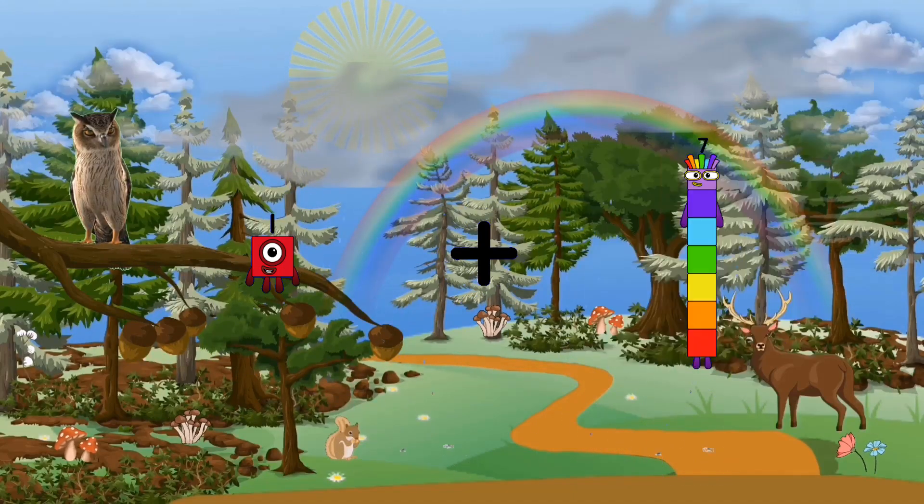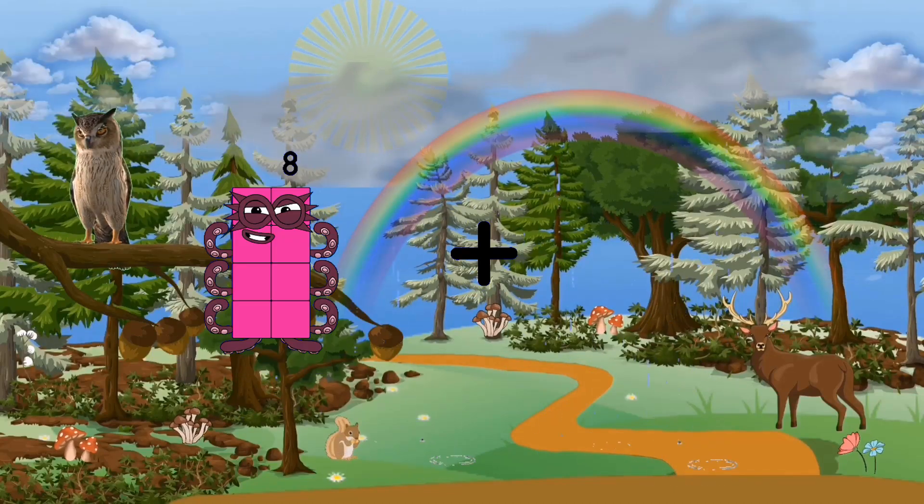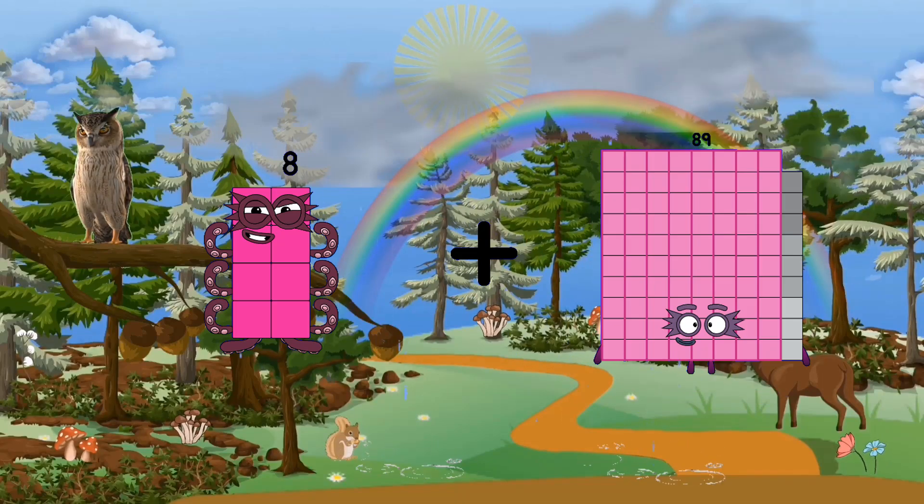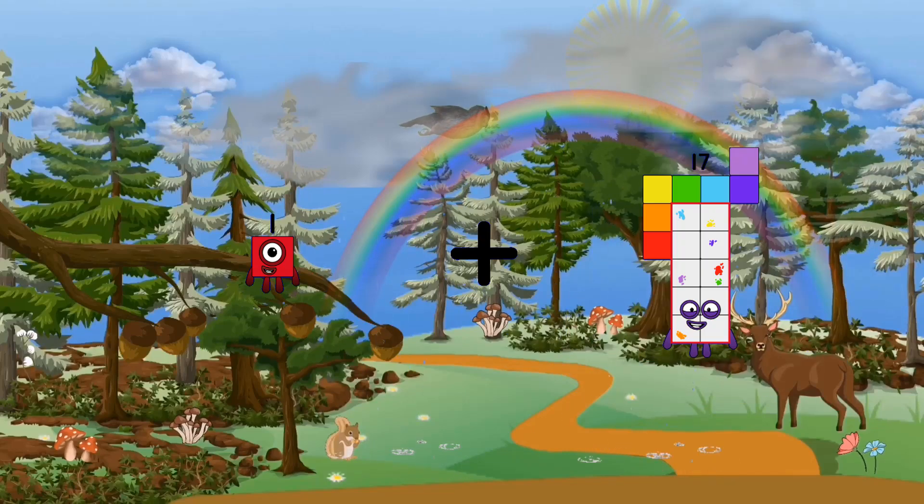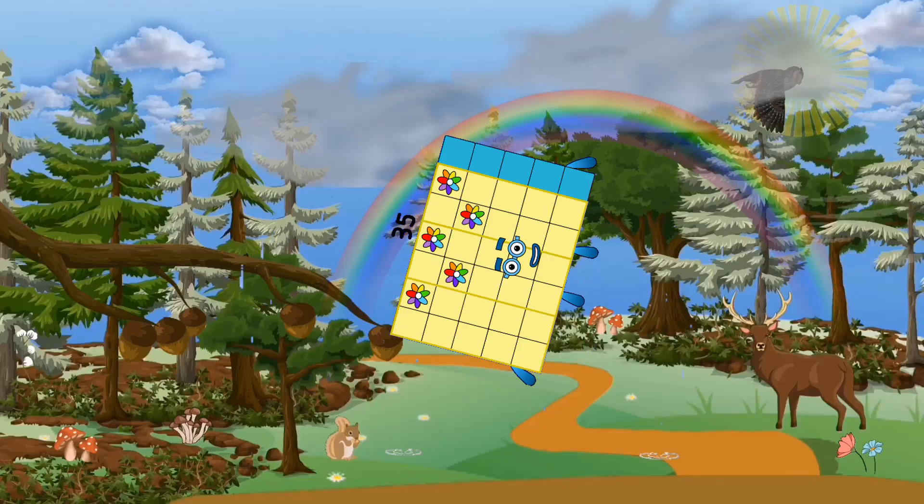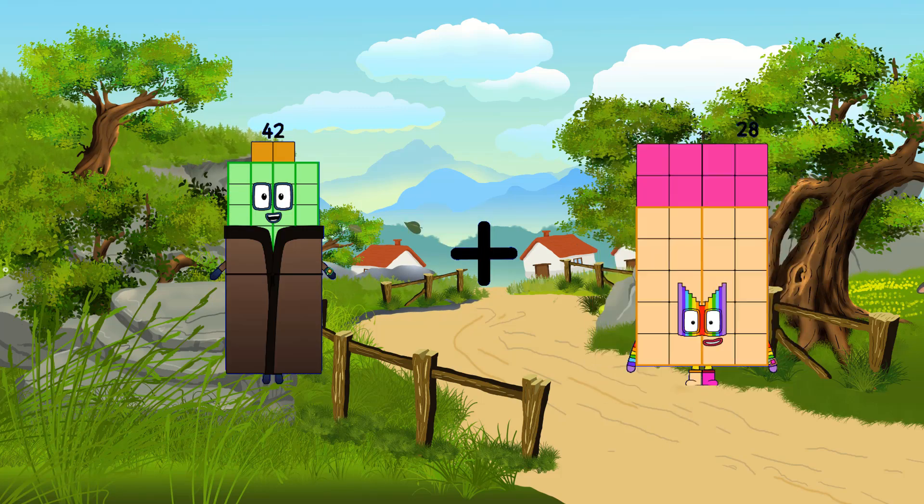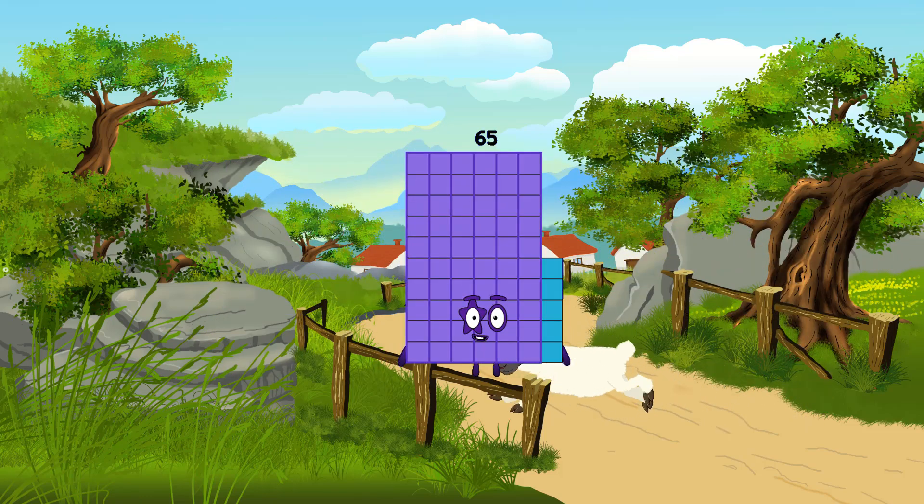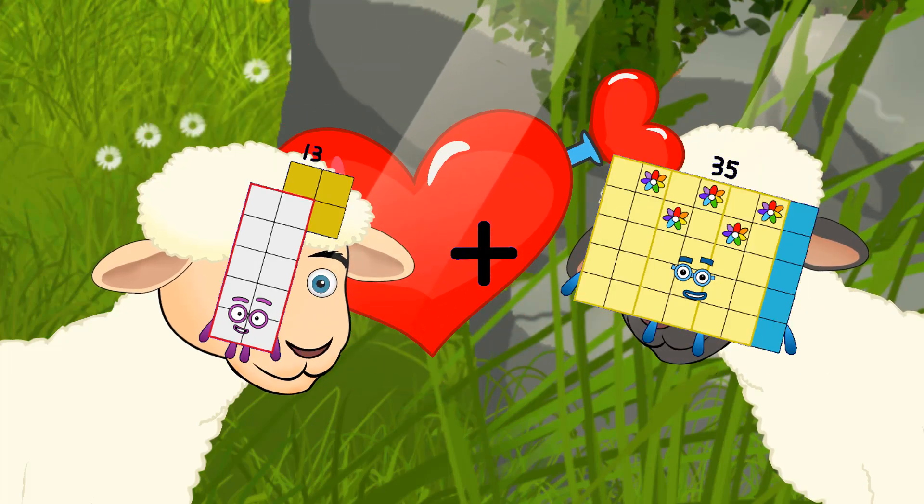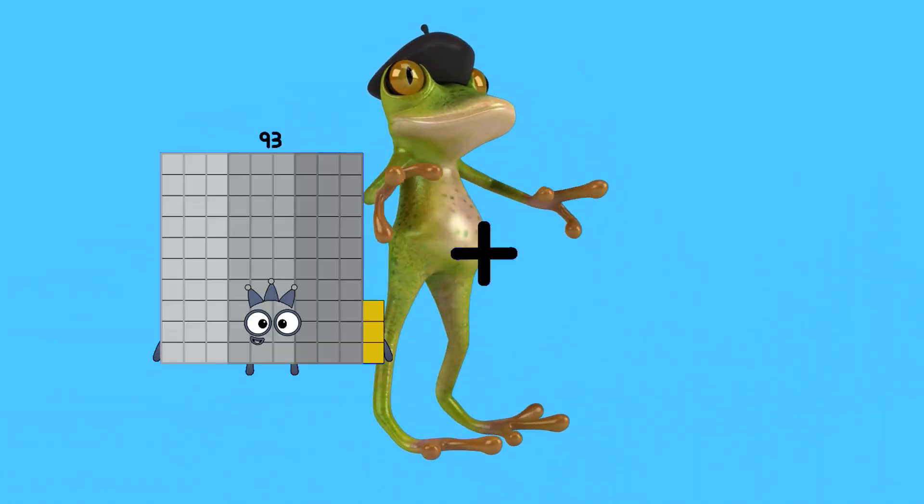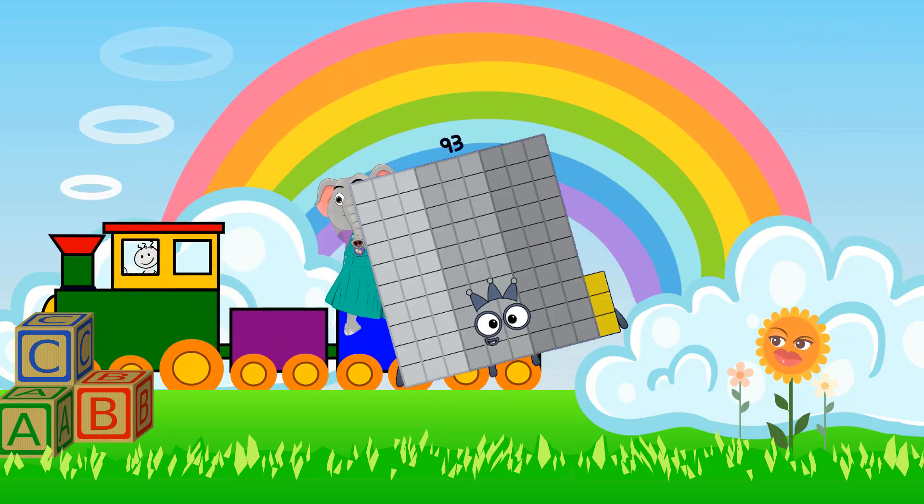1 plus 12 equals 13. 8 plus 89 equals 97. 1 plus 35 equals 36. 23 equals 65. 25 plus 33 equals 48. 64 plus 29 equals 93.